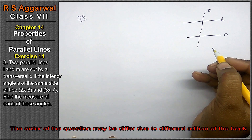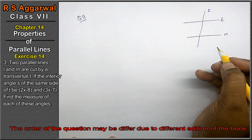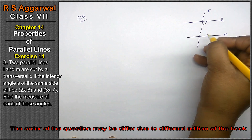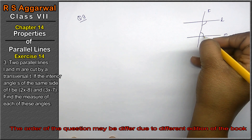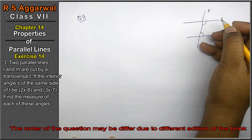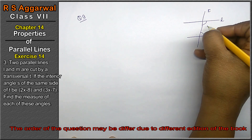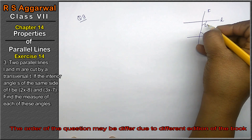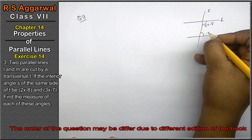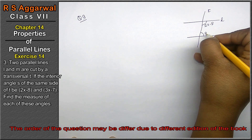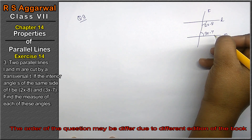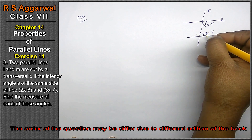If the interior angles on the same side of T — these two interior angles — have values 2x - 8 and 3x - 7, find the measurement of each of these angles.